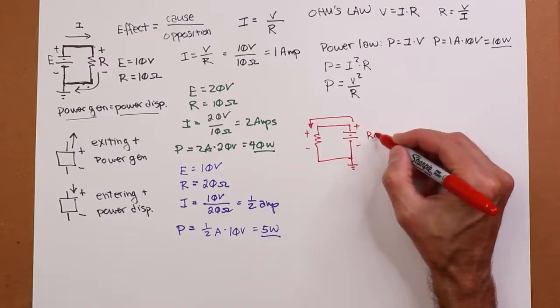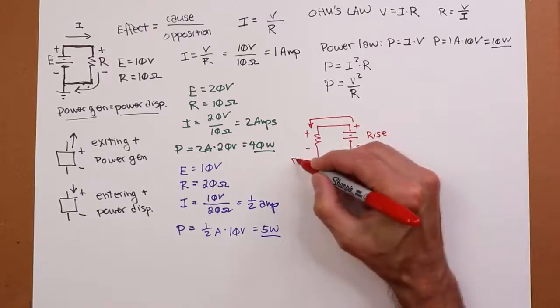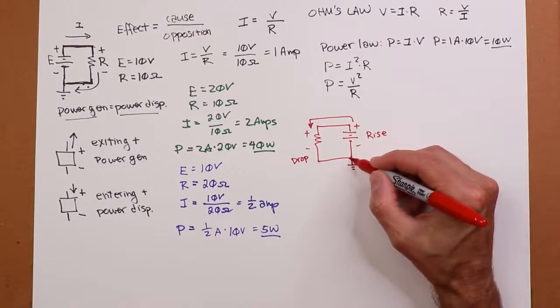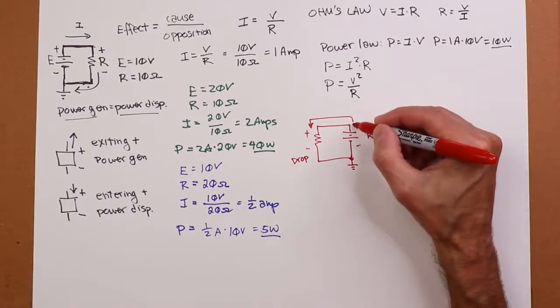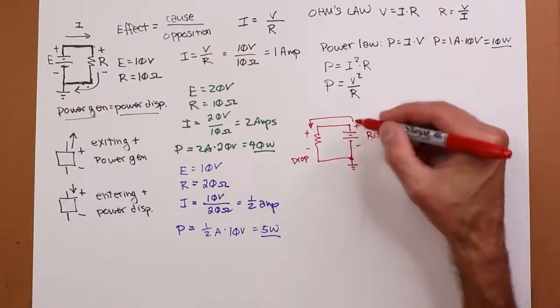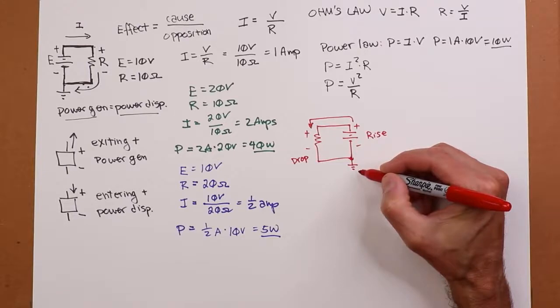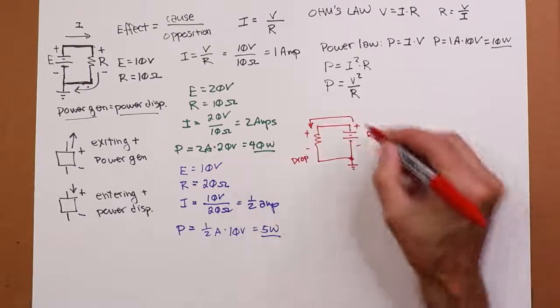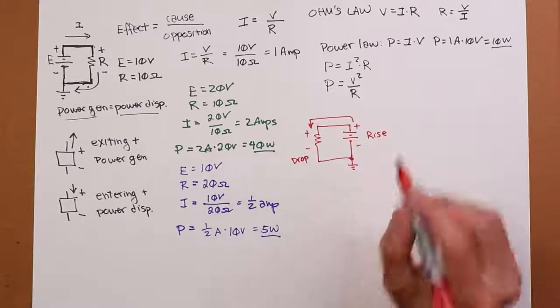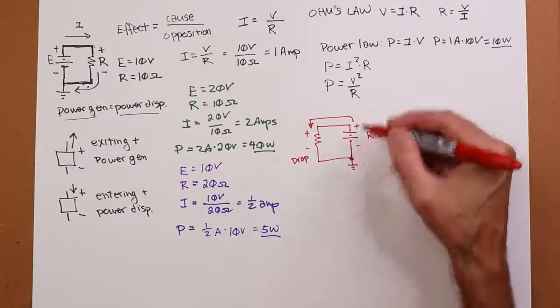So this is the rise and that's the drop. So we think of it as going from ground, you rise up a certain number of volts, and then you drop back down to ground. We're going to take a much closer look at this in the next video. But for now, all you have to remember.